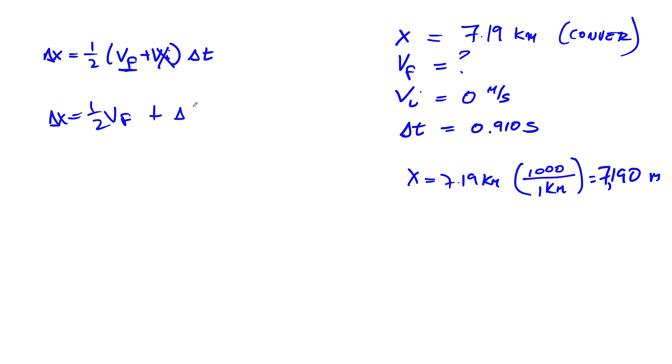So now we can put everything in. We're looking for vf, so divide both sides by time. So Δx over Δt is equal to one-half vf.